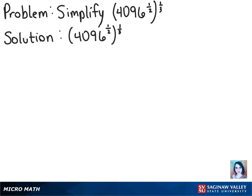The first step is taking the square root of 4096, so we have the square root of 4096 to the 1/3 power. The square root of 4096 is 64, so we can rewrite this as 64 to the 1/3 power.